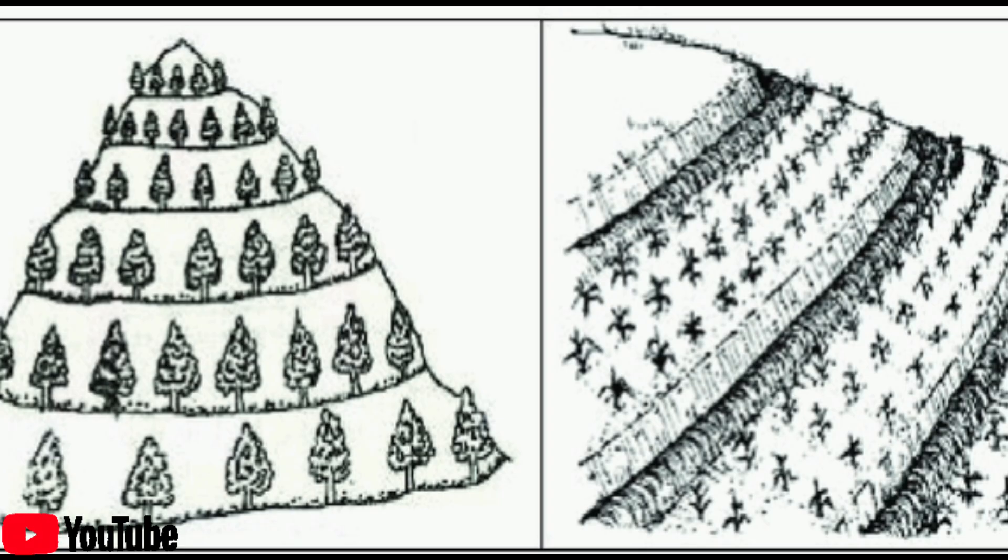Contour system. Used on hillsides or rolling slopes. This system allows for production from land that would otherwise be unusable. Care must be taken to prevent erosion by heavy rains or irrigation.